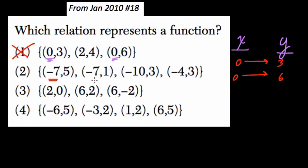Here, the same thing, but with negative 7. First, negative 7 maps to 5, and then negative 7 maps to 1. Again, one x value mapping to two different y values.